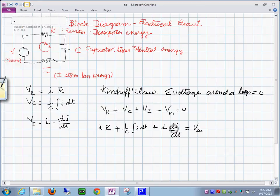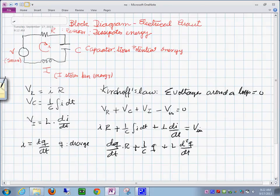Differential equation means that all the terms would be in terms of derivatives. So if we consider that I is dq dt the charge, where q is the charge, then it follows that you could write that dq dt times R plus 1 over C times q plus L times d squared q dt squared equals to V in.